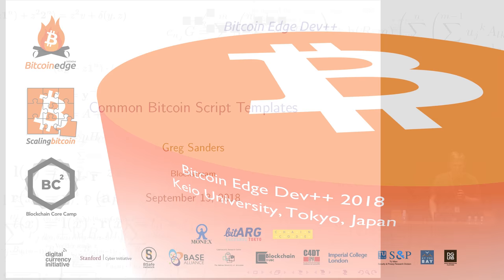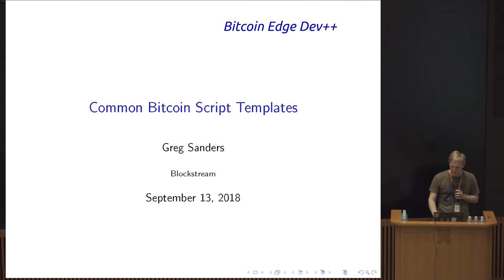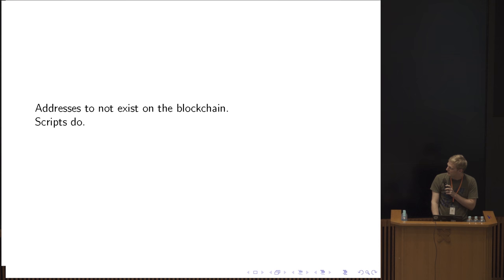This talk is explicitly about the various script templates in Bitcoin used today. As John and Akio have mentioned, addresses do not exist on the blockchain, but scripts do — that's a point that's already been mentioned a few times.